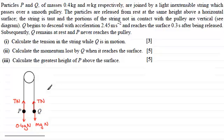We're also told that the particles accelerate with an acceleration of 2.45 meters per second squared, so Q begins to descend, it's going to go downwards, so I'll mark that in there with an acceleration which I'll call a, and a is equal to 2.45 meters per second squared.